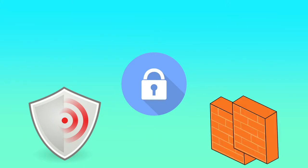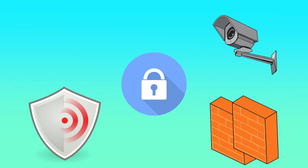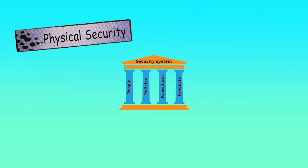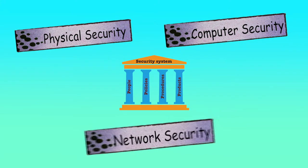For providing security, a number of security products need to be installed in the enterprise. These products include antivirus software, firewalls, surveillance systems, intrusion detection systems, etc. However, just installing these products alone will not provide the necessary security. People, policies and procedures are very important. It needs to be emphasized that people, policies, procedures and products are the four pillars of any security system. Together they provide the solution for physical security, computer security and network security.